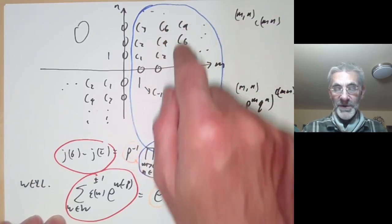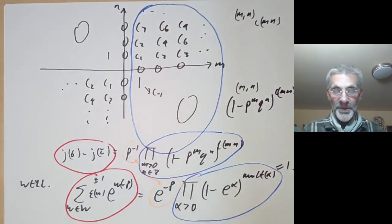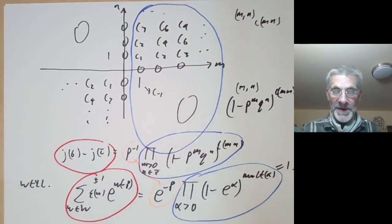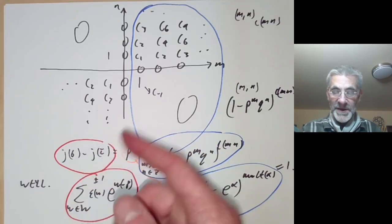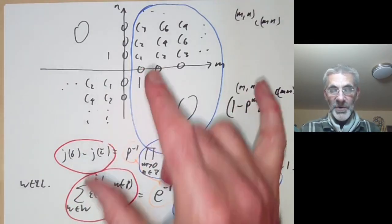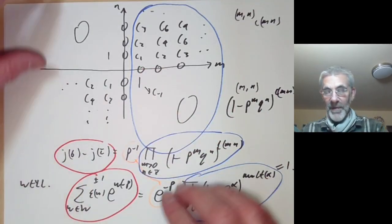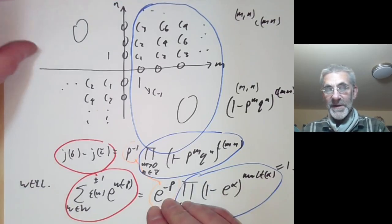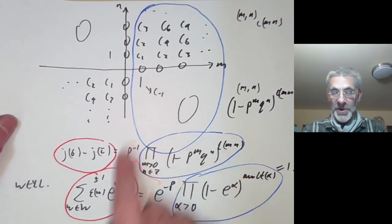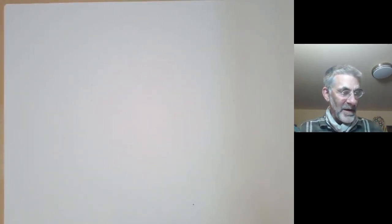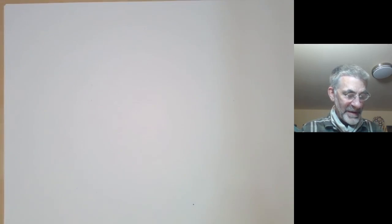In fact, the product formula for the elliptic modular function really is a generalization of the Weyl denominator formula. It's actually the denominator formula for an infinite-dimensional Lie algebra called the Monster Lie algebra. The coefficients c(mn) are the multiplicities of roots of the Monster Lie algebra — very large numbers — and the Monster Lie algebra, as its name suggests, is naturally acted on by the Monster simple group.